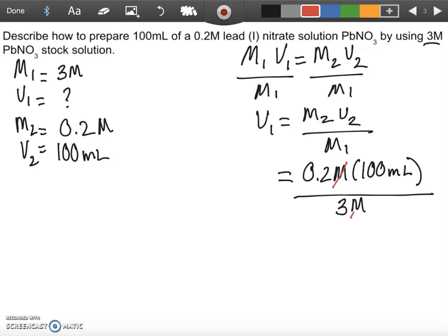And then our M1 is 3 molar. Okay, these are going to go away, the molar right there. Another good reason to leave it in milliliters in this case is because oftentimes, the equipment we use to measure out volume is in milliliters. So the graduated cylinders that we use are in milliliters.